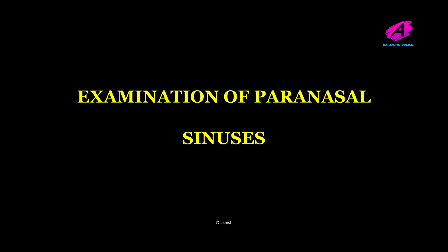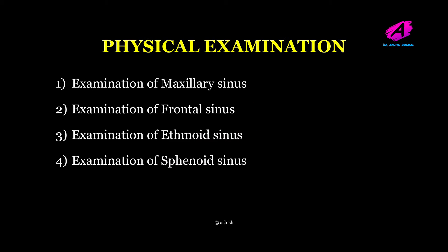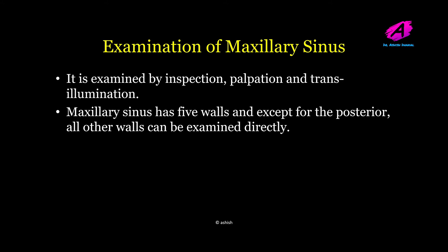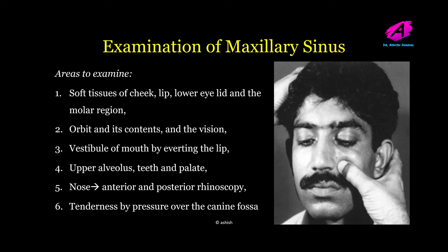Next, coming on to examination of paranasal sinuses. On physical examination we examine the maxillary, frontal, ethmoid, and sphenoid sinuses. Examination of the maxillary sinus is done by inspection, palpation, and transillumination test. The maxillary sinus has five walls and except for the posterior wall, all other walls can be examined directly. The areas to examine include the soft tissue of the cheek, lip, lower eyelid, and the molar region — look for any swelling, edema, or congestion.